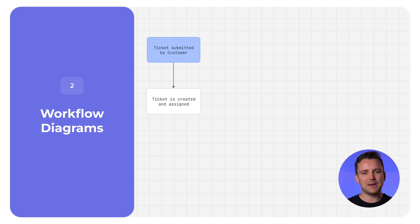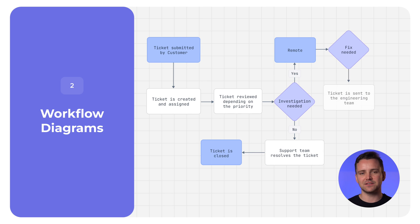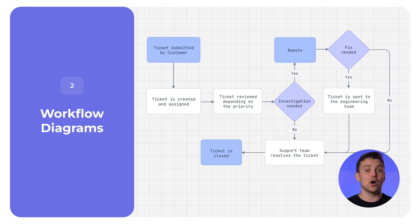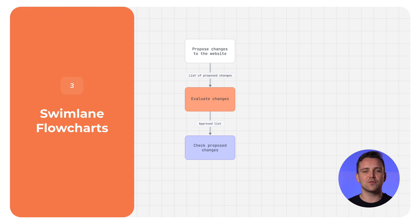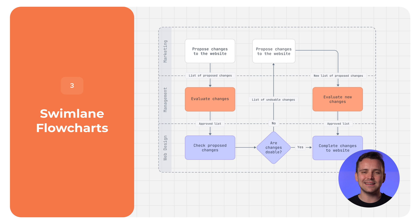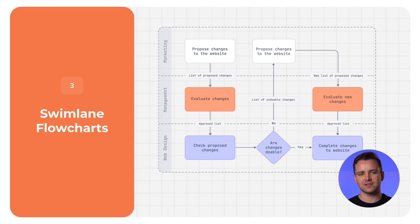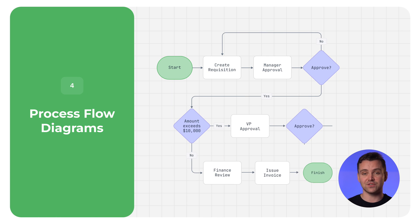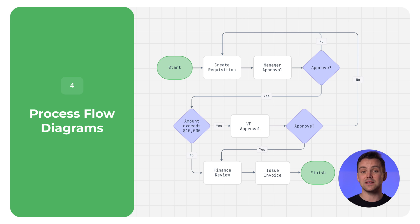Workflow diagrams map out team tasks and responsibilities and are helpful in identifying office bottlenecks as well as onboarding. Swimlane flowcharts are for visualizing how different roles operate and intertwine in a process, and are used to optimize cross-team projects. Process flow diagrams capture the overall flow of any procedure, including subprocesses, as a means to improve it.